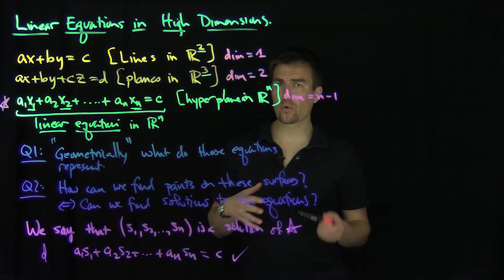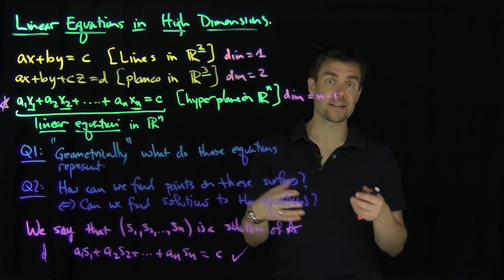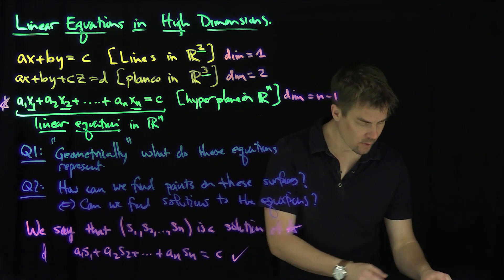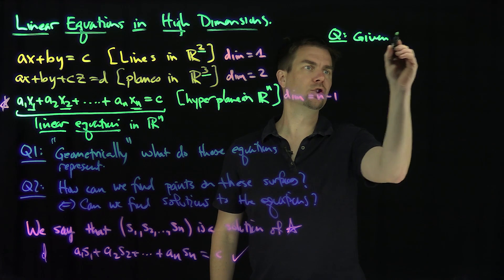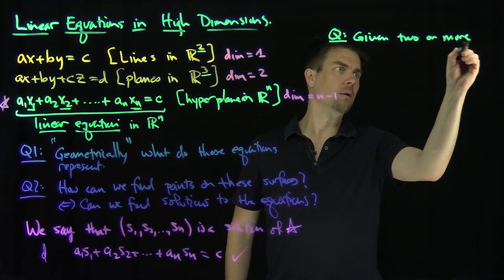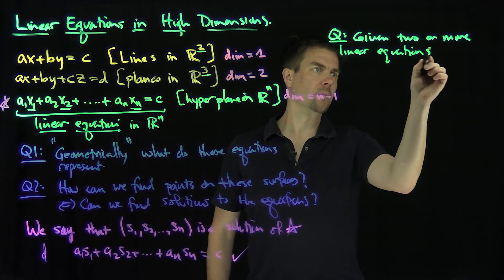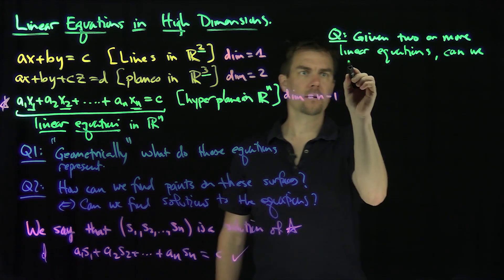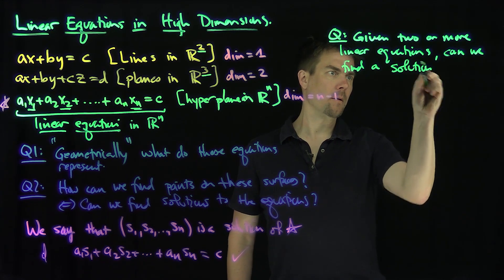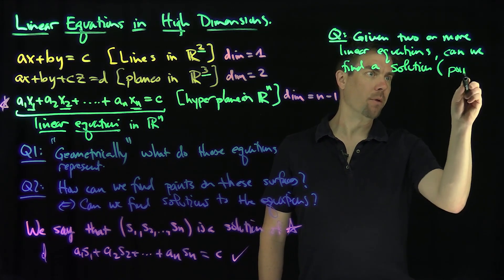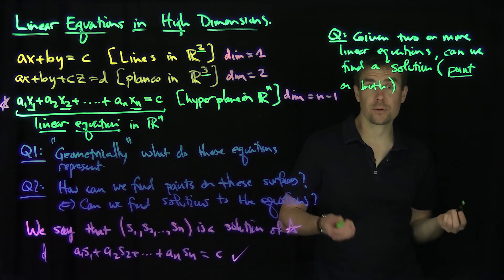Now let's do a more complex example. The question is: what happens when I have two or more of these equations and I ask, are there solutions to that system of equations? Given two or more linear equations, can we find a solution — namely a point on both — and is that solution unique?